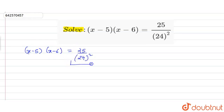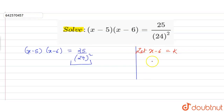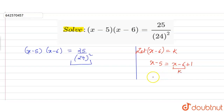Squares are present here, so if we cross multiply the solution will be lengthy. So we are assuming that x minus 6 is equal to k. Let x minus 6 equal to k. So x minus 5 is equal to x minus 6 plus 1, which we have assumed to be k, so x minus 5 is equal to k plus 1.